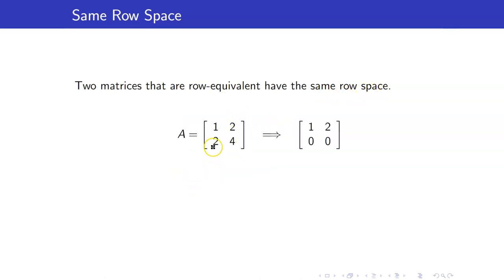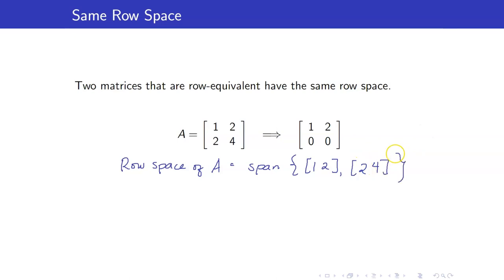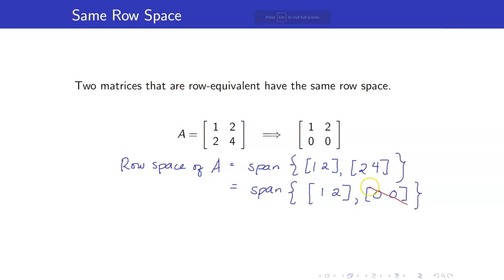For example, I have matrix A here, and its row echelon form is this one. According to our theorem, the row space of A, which is the span of (1, 2) and (2, 4), is the same as the span of the rows of its REF. The zero row vector can be dropped, because the span of (1, 2) and (0, 0) is the same as the span of just (1, 2). We can also delete the row vector (2, 4) since it is a linear combination of (1, 2). So the row space of A is spanned by just one row vector, (1, 2).